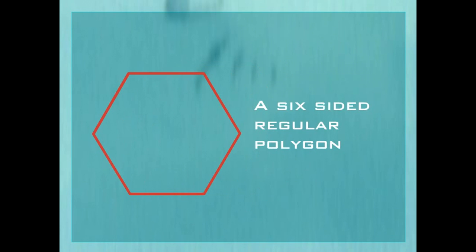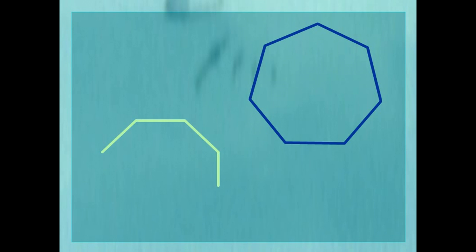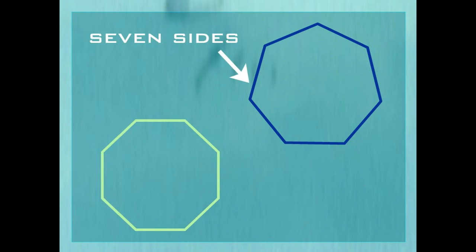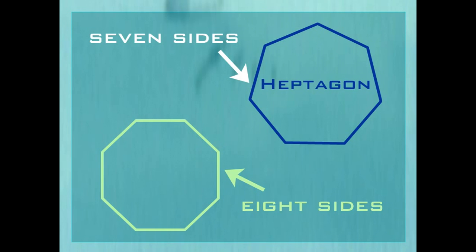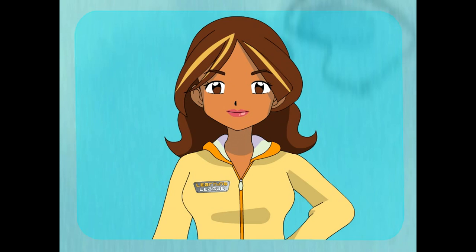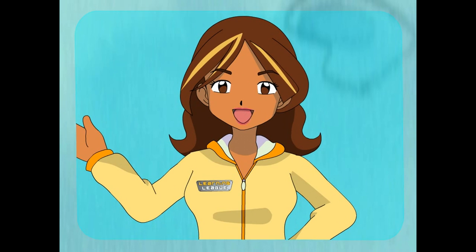Look at this one — that has six sides! It's called a hexagon. Check out these two: seven sides and eight sides! The seven-sided one is called a heptagon. The eight-sided one is called an octagon. All of these regular polygons have sides that are the same length, and all of their angles are also the same measurement.